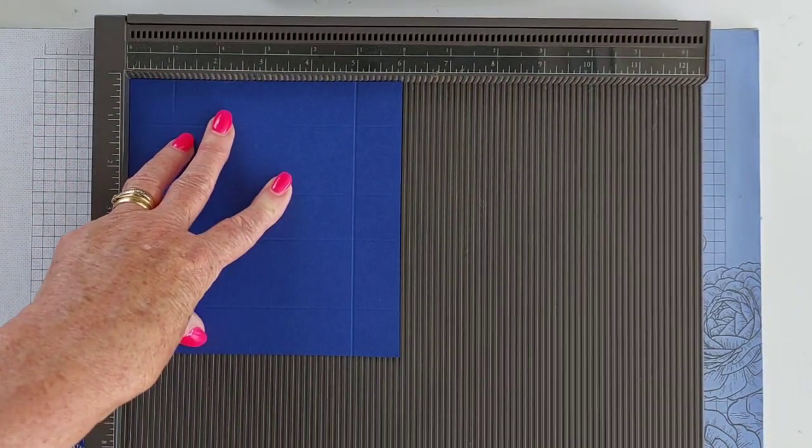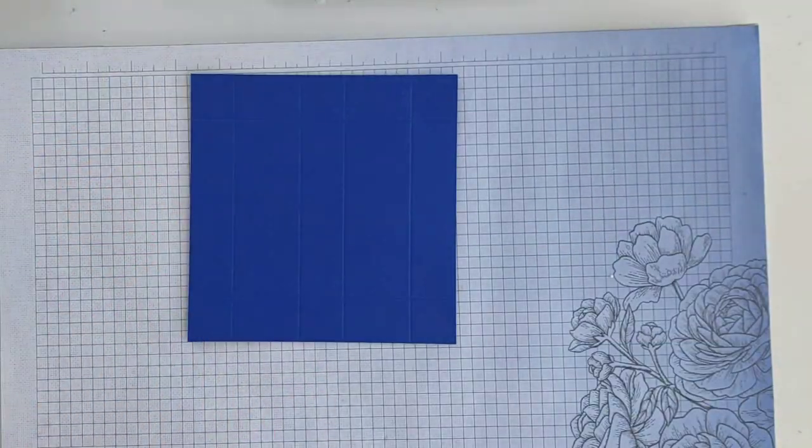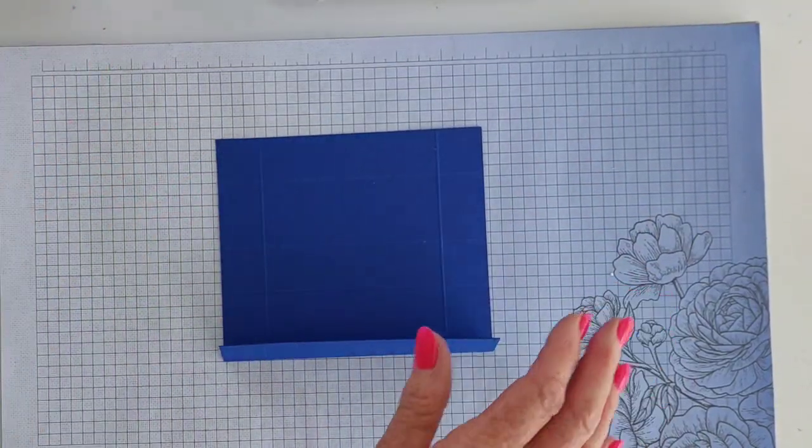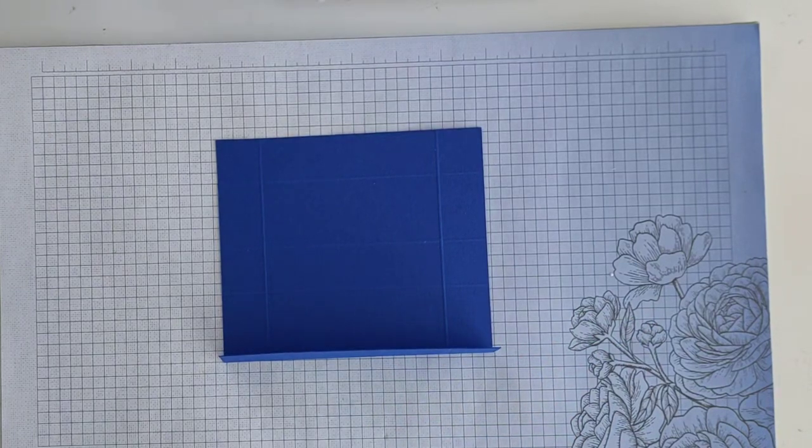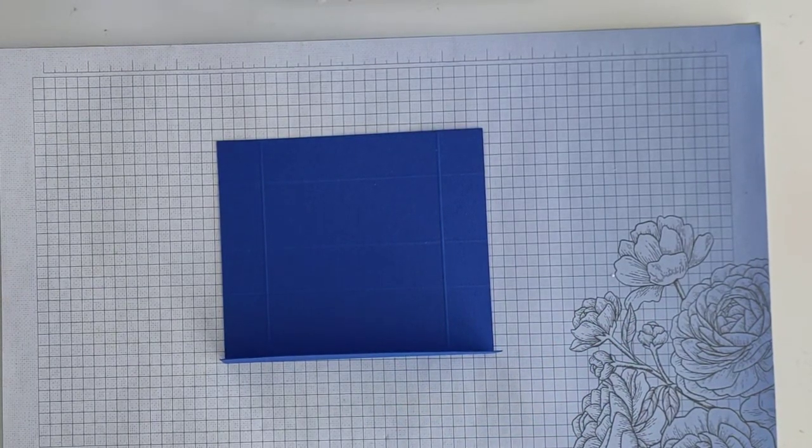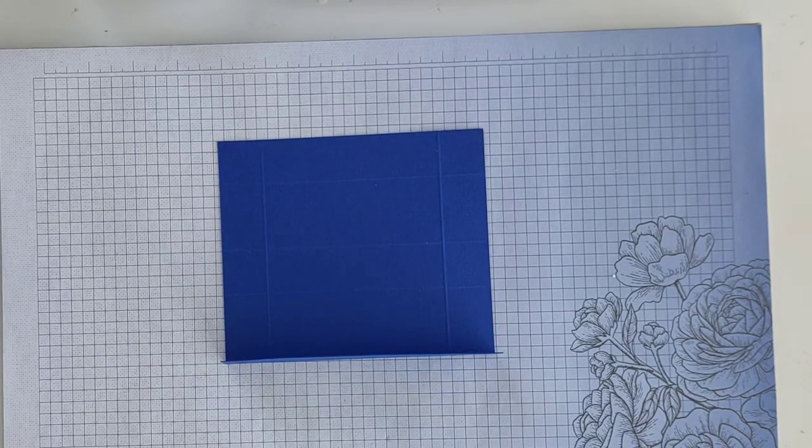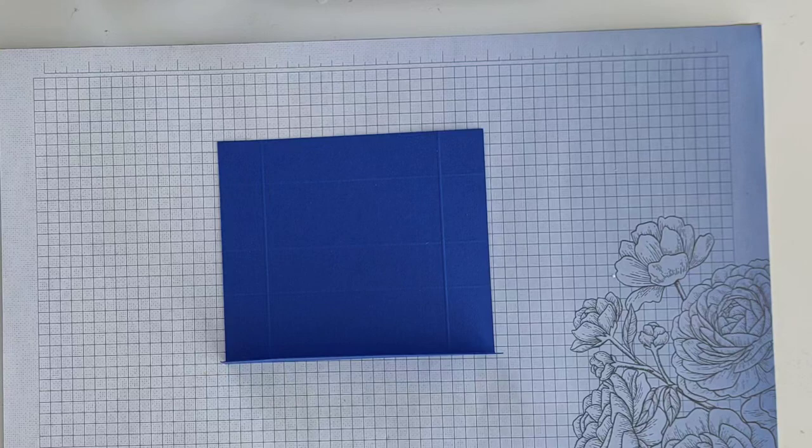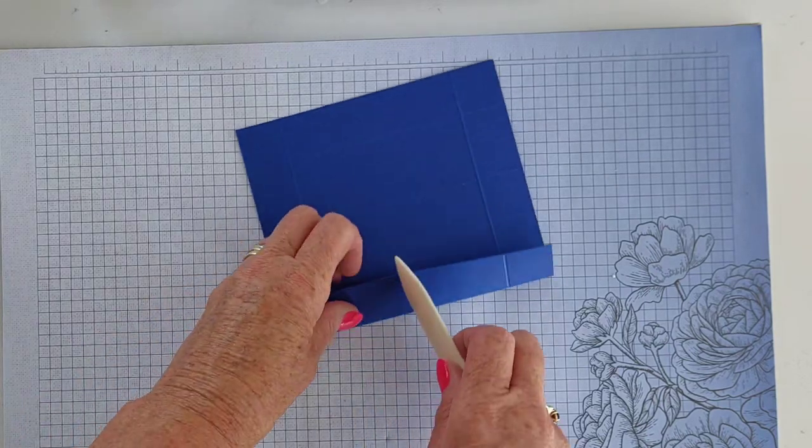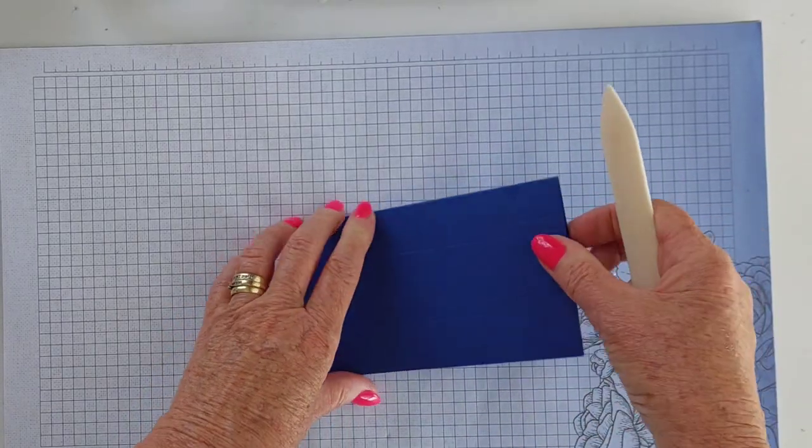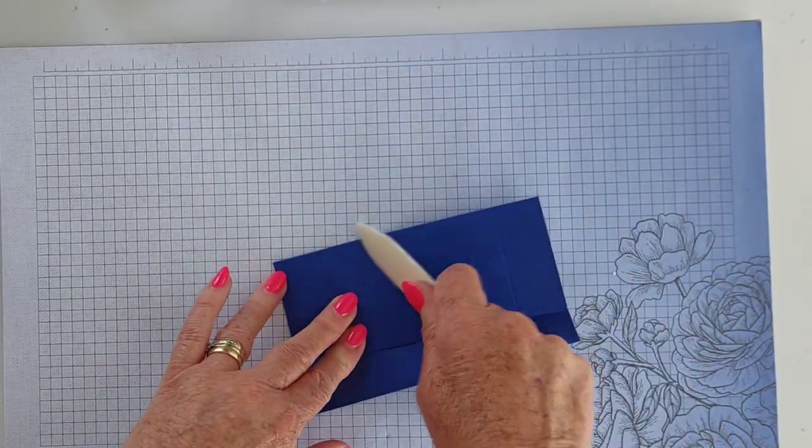I've put the dimensions listed below in the description bar. Use your bone folder. Give each of those score lines a really good burnish.